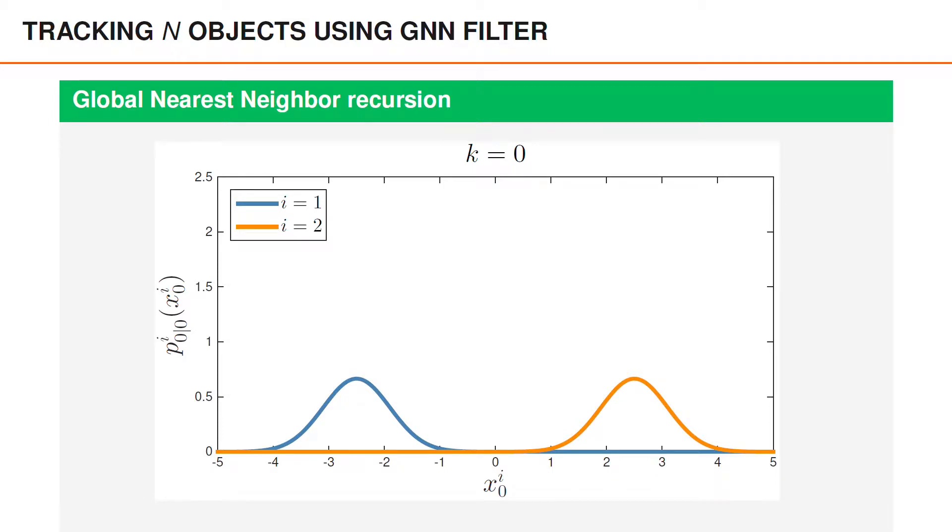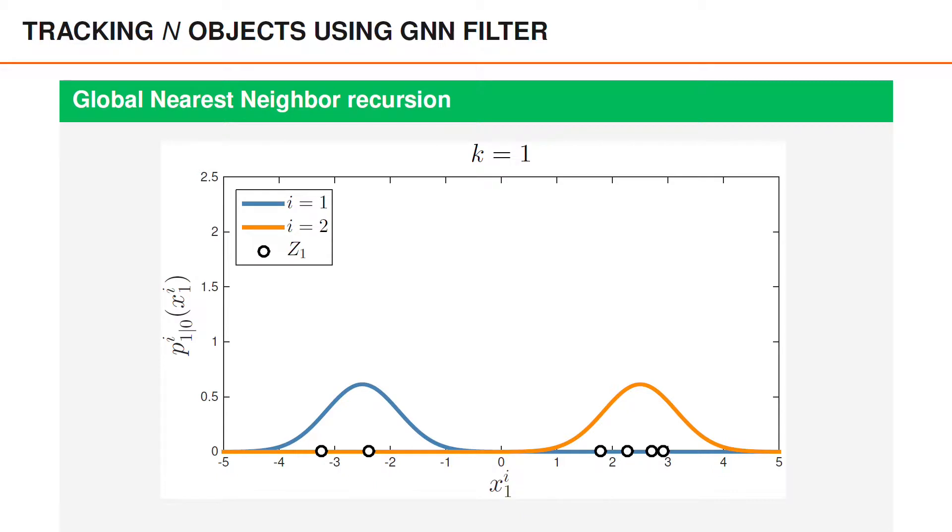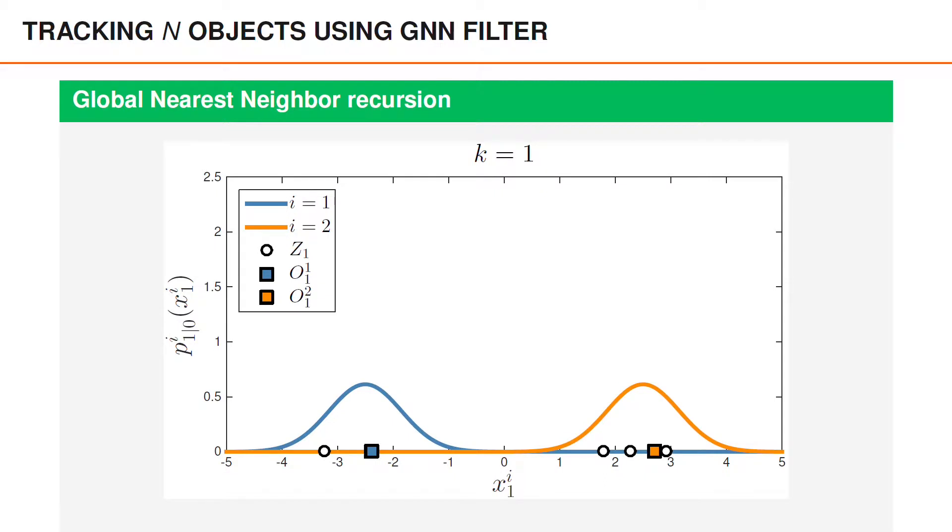We start with an initial prior at time 0. The first object is on the left in blue and the second object is on the right in orange. First we predict to time 1 and at time 1 we get a set of detections. In this case there are 6 detections. We compute an optimal association which is illustrated here by coloring the associated detection with the corresponding object color.